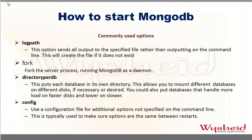The next parameter is --config. The config parameter lets you start MongoDB from a configuration file using the options specified in that file. Rather than giving all parameters on the command line, you can specify all parameters in a configuration file. Another advantage is that when the parameters are specified in a configuration file, every time the startup will use the same parameters, so your configurations will remain constant between multiple restarts.